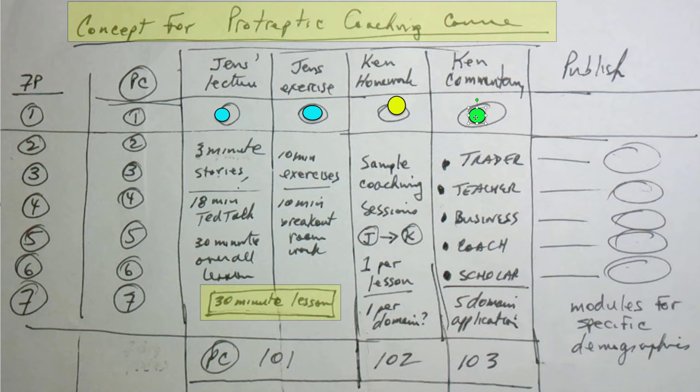What that gives you then is five domains where protreptic coaching could be specifically applied to different demographics. So when you want to market this whole thing, you have a logical flow of strong connection to true storytelling, then the protreptic coaching in detail with the lecture and exercise material of the seven big ideas supplemented by me doing the homework for each of those seven big ideas in a 10-minute session. Then coaching sessions from Jens to me with commentary, and then each one of those coaching sessions could be bundled as an example to be applied to a specific demographic.